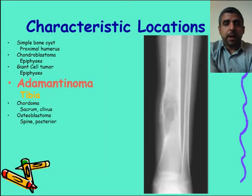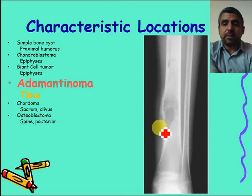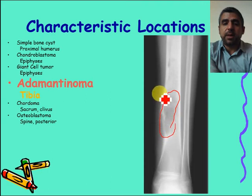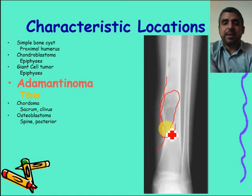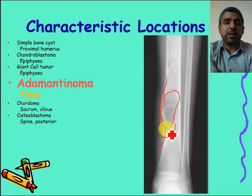Regarding adamantinoma, the most common location is the tibia. You can see a lytic lesion with variable content and expansion of the bone — a widened bone — most likely to be an adamantinoma, though osteomyelitis is also in the differential. In this case, it was an adamantinoma.